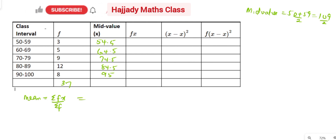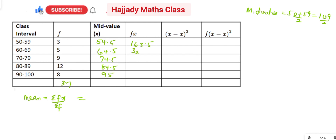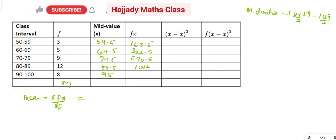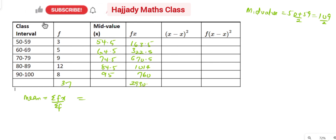Now we need our fx, that means frequency multiplied by x. So using a calculator: 3 times 54.5 gives us 163.5; 5 multiplied by 64.5 gives us 322.5; here I'm going to have 670.5; here 1014; and lastly 760. Adding everything together, the sum is going to be 2930.5.